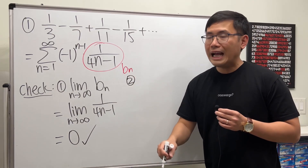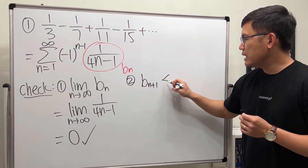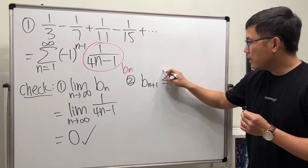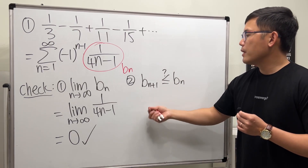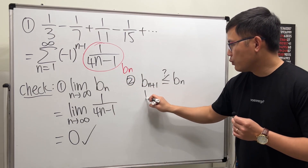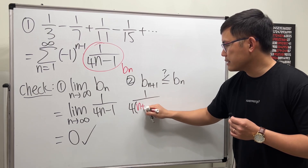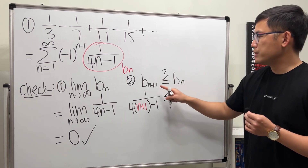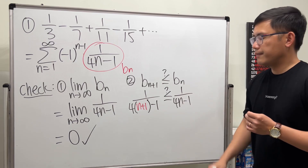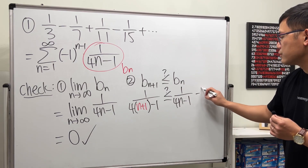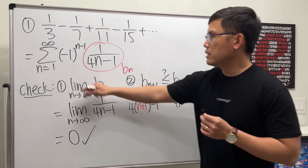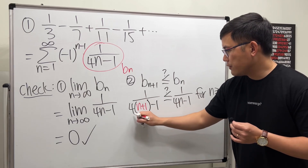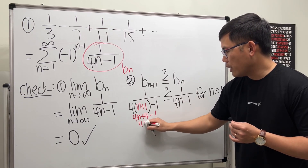Secondly, we have to make sure that bn+1 is less than or equal to bn — in other words, bn has to be a decreasing sequence. For bn+1, we put n+1 into the formula, giving us 1 over 4(n+1) minus 1. We need to check if this is less than or equal to bn, which is 1 over (4n minus 1), and this must hold for n greater than or equal to 1. Working it out: 4(n+1) minus 1 equals 4n plus 3.